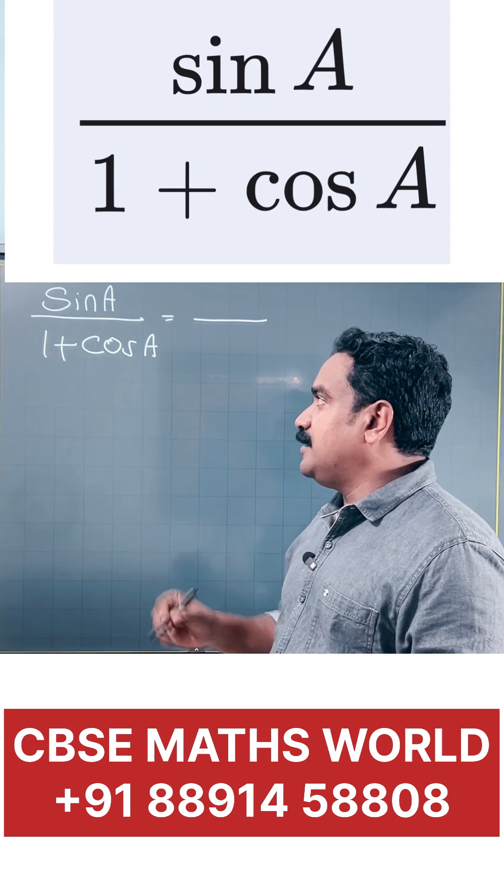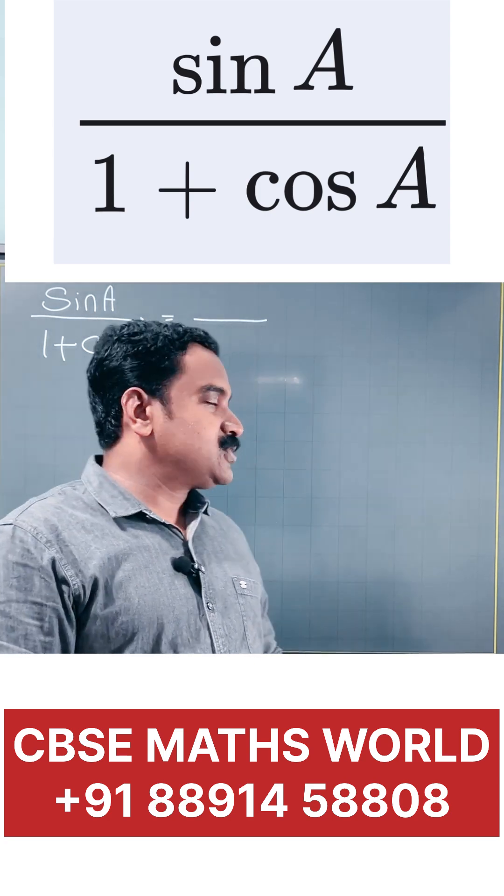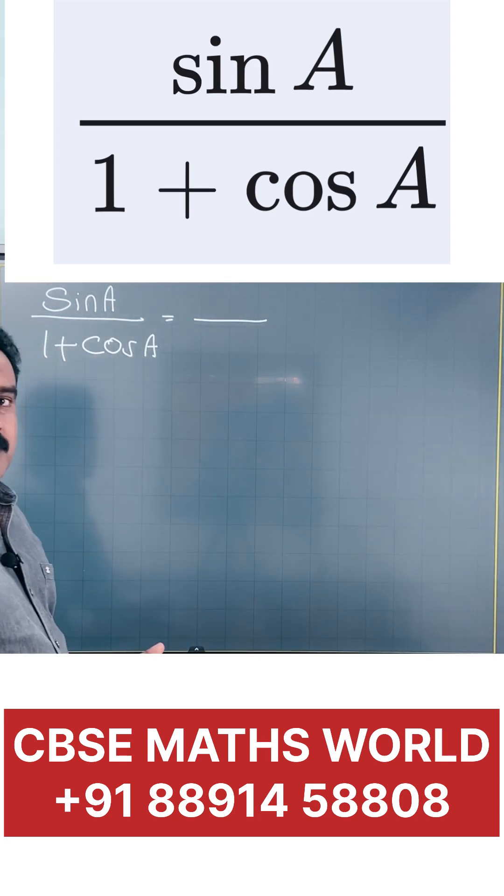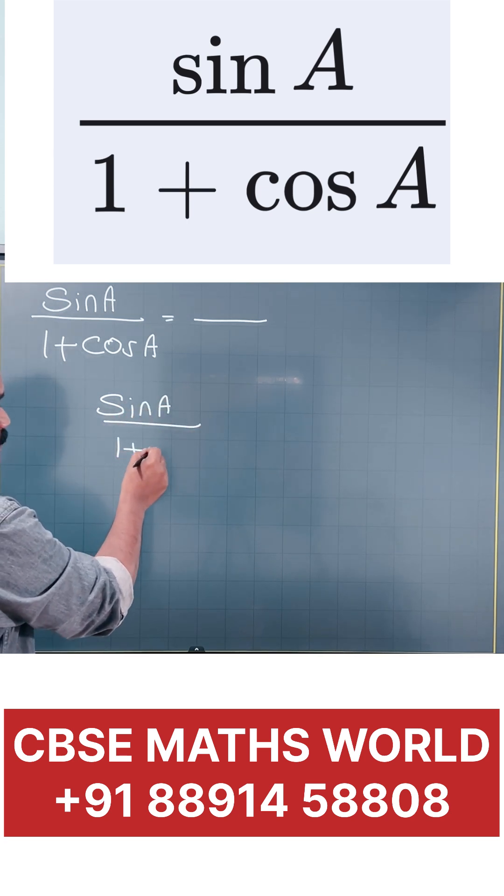And the question is sine A divided by 1 plus cos A. What is its value? Options are given. I am not showing here options. So, how we can solve this type of question? The question is sine A divided by 1 plus cos A.